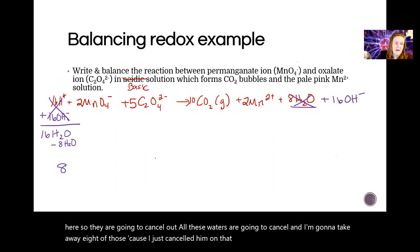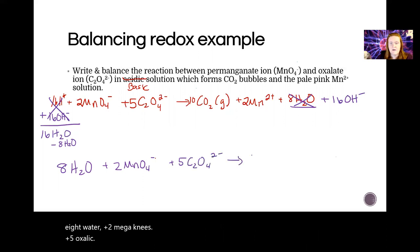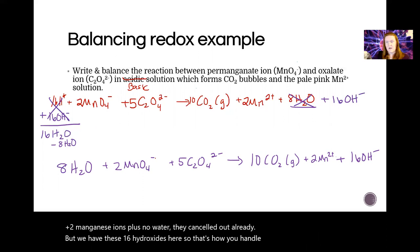So in the end we end up with eight water plus two MnO4- plus five oxalate gives 10 CO2 plus two Mn^2+ plus no water - they canceled out already - but we have these 16 hydroxides here.